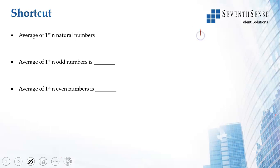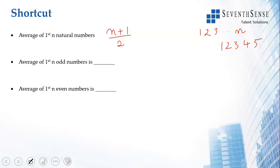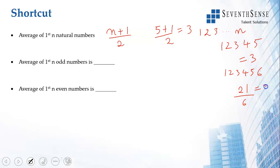Now let's look at three special formulas. The average of the first n natural numbers (1, 2, 3, … n) is (n+1)/2. For example, if n=5, the numbers are 1 through 5, sum is 15, average is 3; and (5+1)/2 = 3. If n=6, sum is 21, average is 3.5; and (6+1)/2 = 3.5. The formula works.